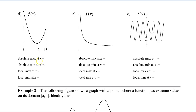Here we have an absolute max at x equal to 8, because that's the largest value. For the absolute min, there's an open circle — a hole — where the minimum would be. So actually there is no minimum, because we can't reach that low y value due to the open circle. A local max occurs at x equals 8, but also there's a local max at x equals 15. So it occurs at 8 and 15. And since there was a hole at the lowest point, there is also no local min.